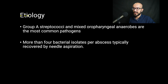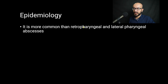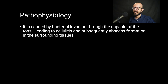Regarding etiology, it is caused by group A streptococci and mixed oropharyngeal anaerobes, which are the most common pathogens. More than four bacterial isolates per abscess are typically recovered by needle aspiration. The peritonsillar abscess is more common than the retropharyngeal and lateral pharyngeal abscesses. Regarding pathophysiology, it is caused by bacterial invasion through the capsule of the tonsil, leading to cellulitis and subsequently abscess formation in the surrounding tissues.